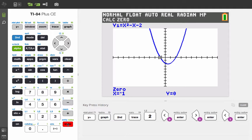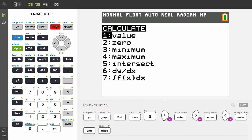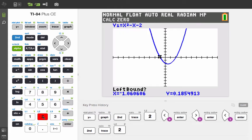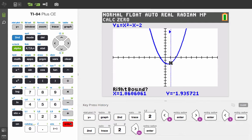Now, let's find the other zero. Once again, we'll press second calc, select two for zero. And this time, we'll move the left bound closer to the other point, but still to the left of it, and then we'll press enter and move the right bound to the other side of the zero.